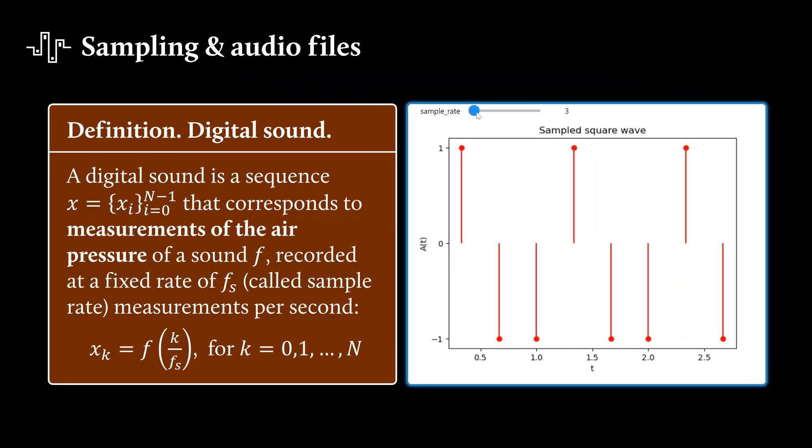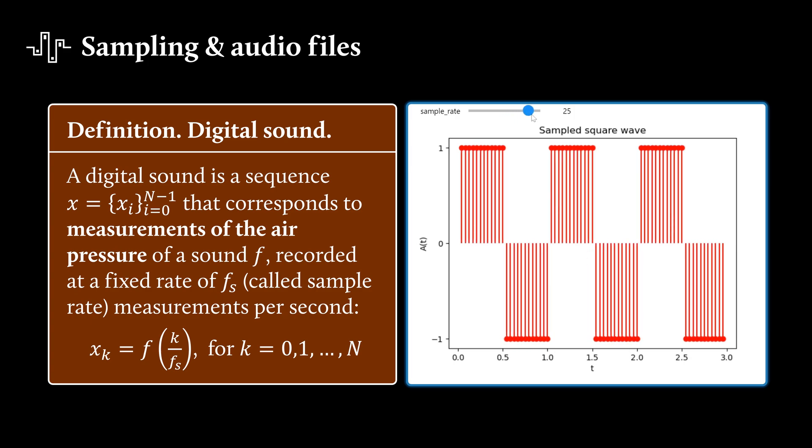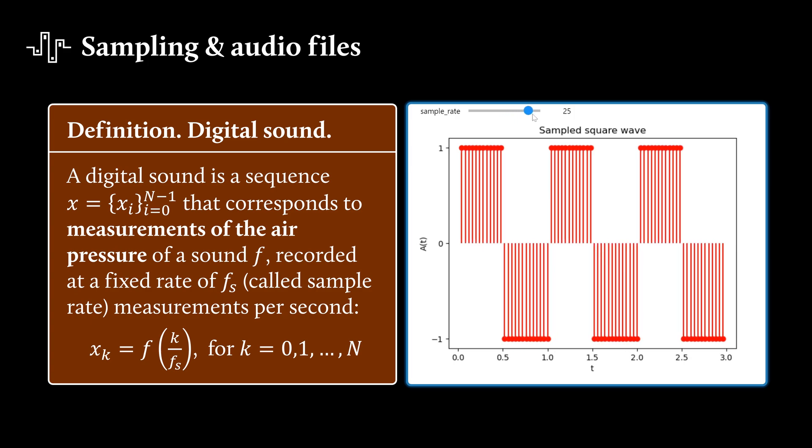That is, we store 44,000 measurements per second. Now with this, we can define what a digital sound really is. A digital sound is just a sequence, x₀, x₁, x₂, up to xₙ₋₁, that corresponds to measurements of the air pressure of a sound f, recorded at a fixed rate of fs measurements per second. And this fs is called the sample rate.